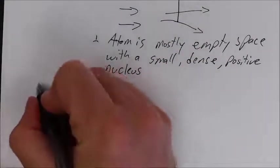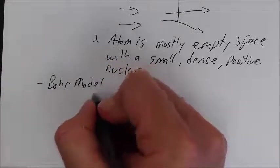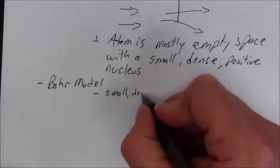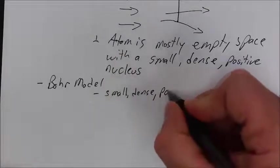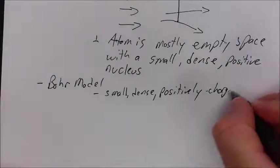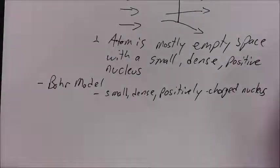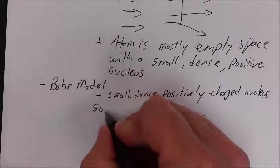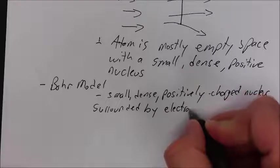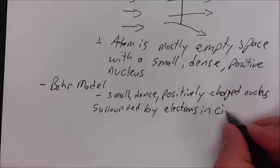And this then led eventually to the Bohr model, which is a small, dense, positively charged nucleus surrounded by electrons in circular orbits. This is also known as a planetary model.